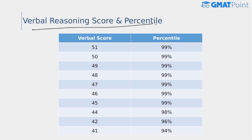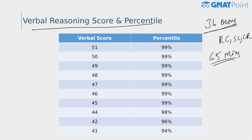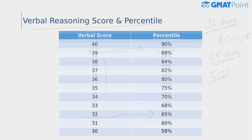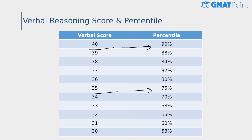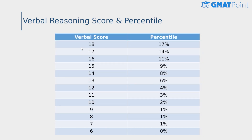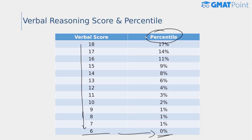The verbal reasoning section is also a very important section on the GMAT. It comprises 36 questions, covering reading comprehension, critical reasoning, and sentence correction, with a total time limit of 65 minutes. The verbal score also ranges from 6 to 51. For a score of 51, the percentile is 99; for 44, it's 98; for 40, it's 90; for 35, it's 75; for 30, it's 58; for 25, it's 38; and for 20, it's 22. The lowest score of 6 corresponds to the lowest percentile. Remember, these percentiles keep varying depending on the number of test takers, so focus on your scores.